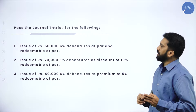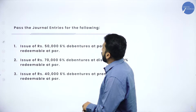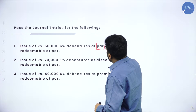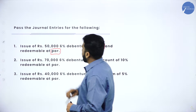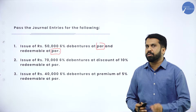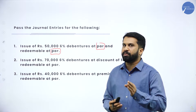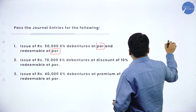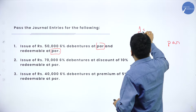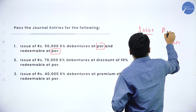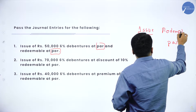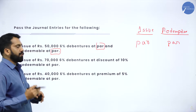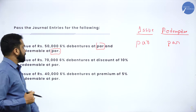Pass the journal entries for the following. First one: issue of 50,000, 6% debentures at par, redeemable at par. So the first one is issued at par and redemption also at par — that is par and par. We will go for journal entries later.